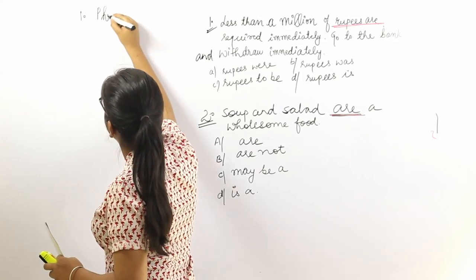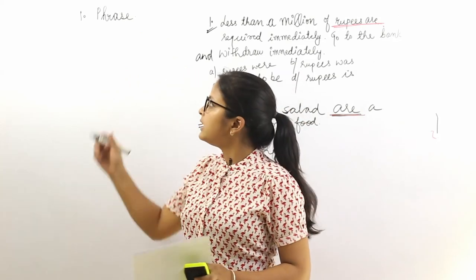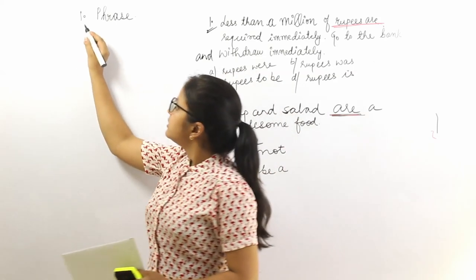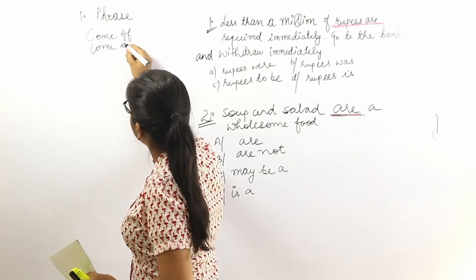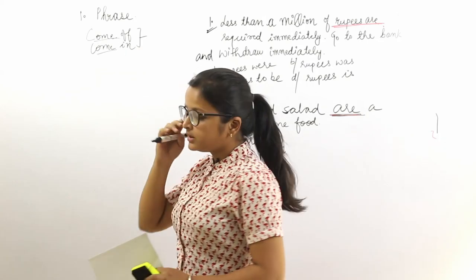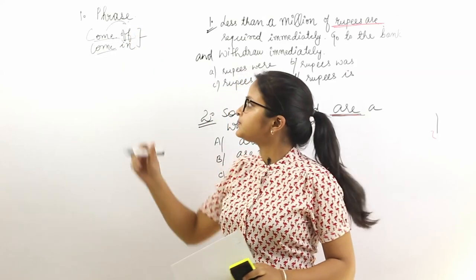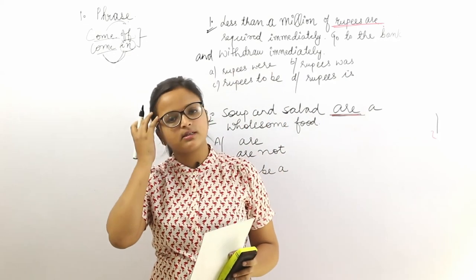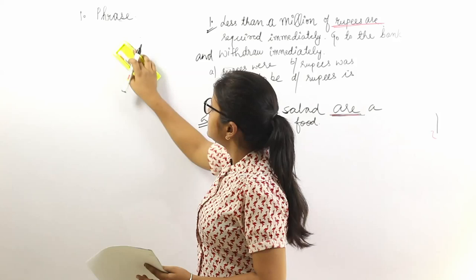The first category is phrases. As the name suggests, phrase replacement involves phrases you should know in English grammar. There are abundant phrases you must know, like 'come off' and 'come in.' When a word combines with another word or two, it becomes a phrase, and the meaning of the phrasal verb changes accordingly. Try to memorize phrases and their meanings.